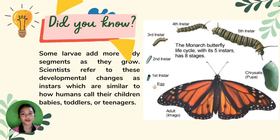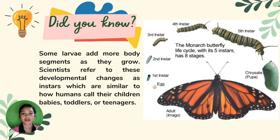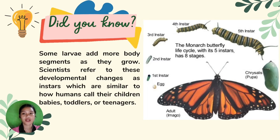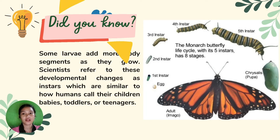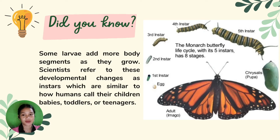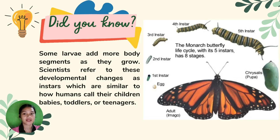Did you know? Some larvae add more body segments as they grow, like this monarch butterfly presented on the screen. Scientists refer to these developmental stages as instars, which are similar to how humans call their children babies, toddlers, or teenagers. For example, a very young larva would be called an instar 1, and a teenager-stage larva would be called an instar 3. The number of instar stages can be different depending on the type of insect.